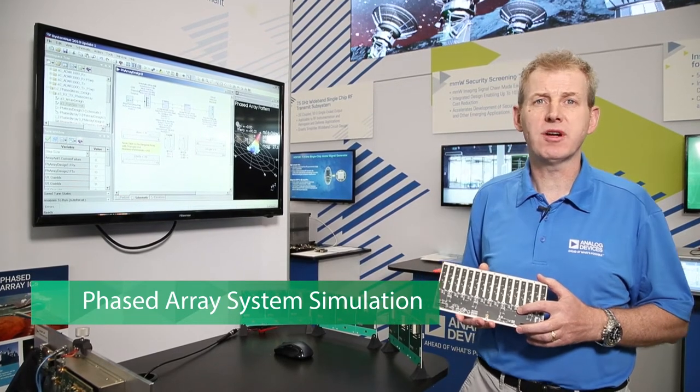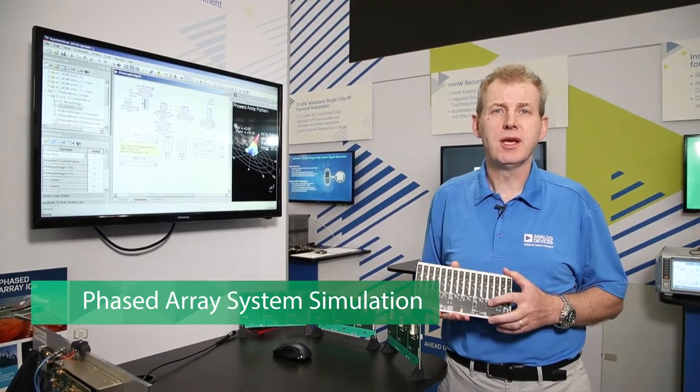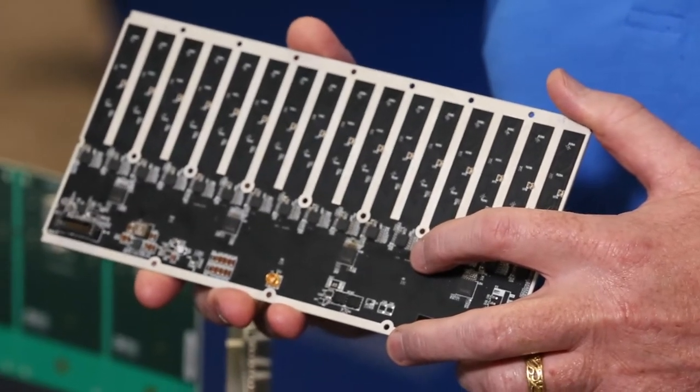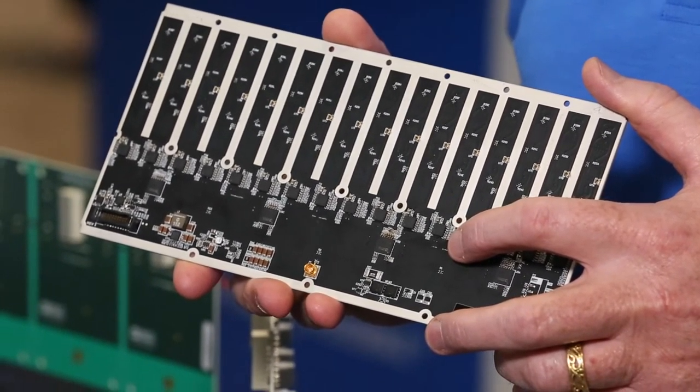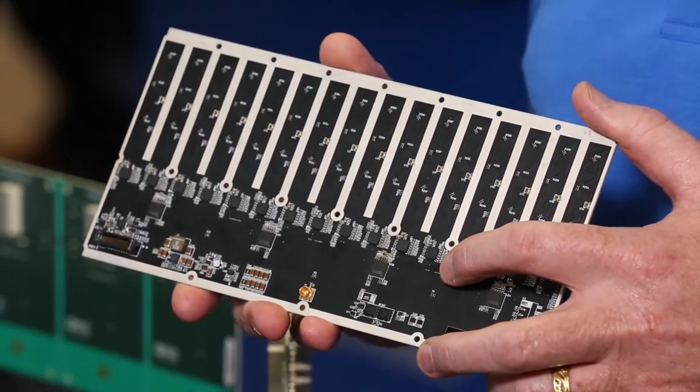We've expanded our product offering with the new TR module, ADTR1107, which provides 25 dBm of saturated power and a received noise figure of 2.3 dB, all in a 5x5 millimeter package.